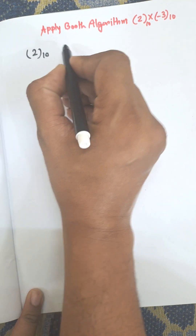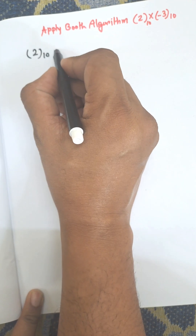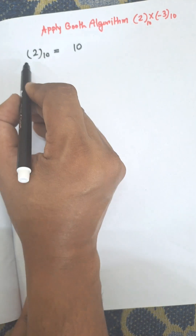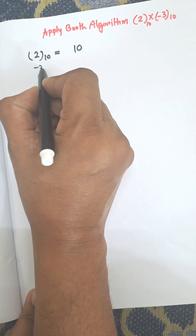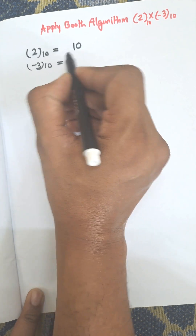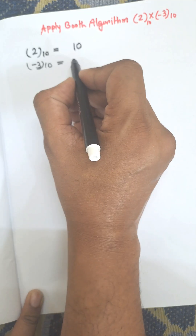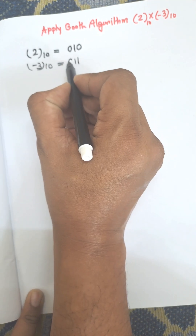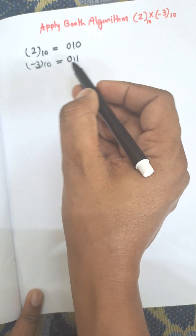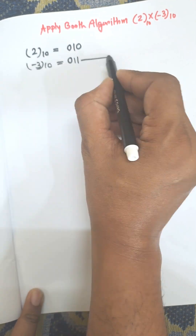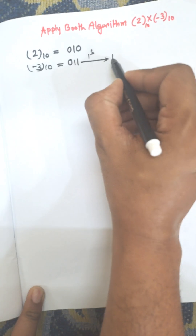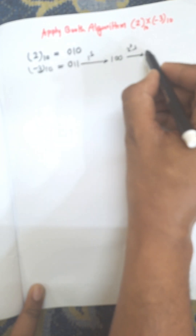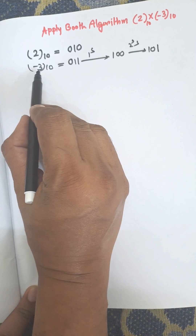We need to convert the binary number for -3. For 3, binary is 1 1. Using a 3-bit register, add an extra 0, then take the complement. The 1's complement equals 1 0 0, and the 2's complement equals 1 0 1. As it is a negative number, we perform the 2's complement.